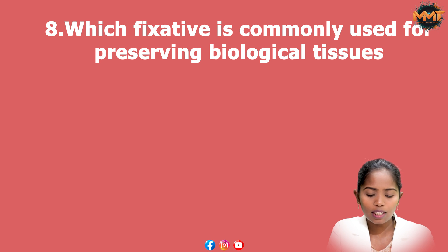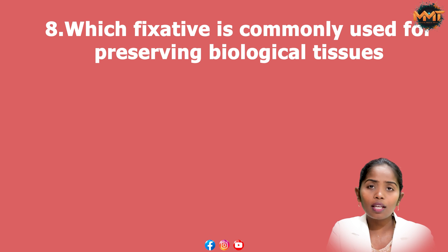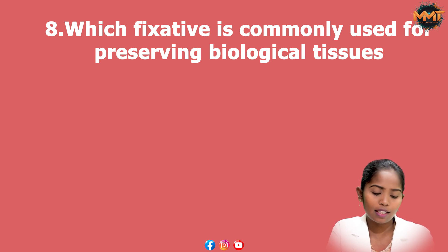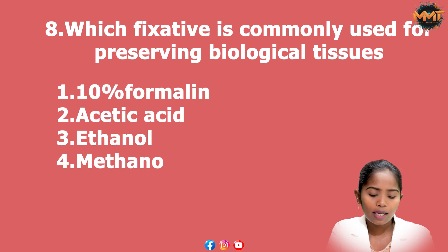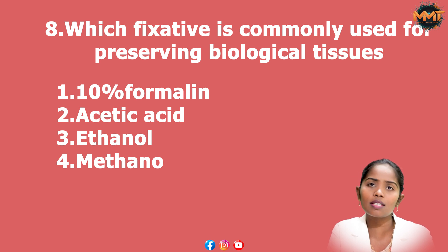Question 7: Which fixative is commonly used for preserving biological tissues? Options: 1. 10% formalin, 2. Acetic acid, 3. Ethanol, 4. Methanol. The answer is 10% formalin — tissues are fixed and preserved using 10% formalin.